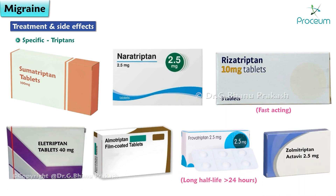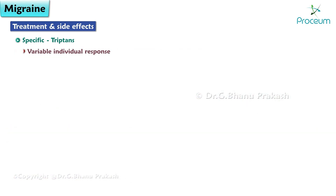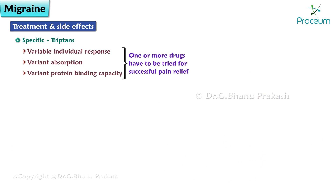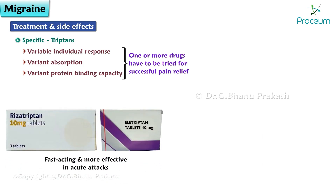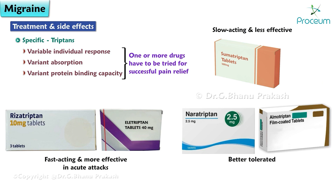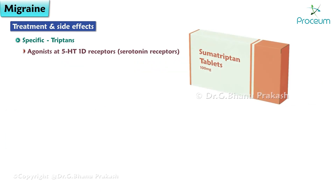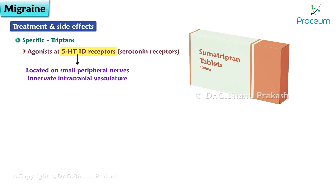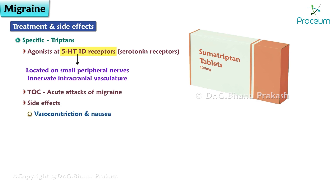Triptan examples include sumatriptan, naratriptan, rizatriptan (fastest acting), eletriptan, almotriptan, frovatriptan (long half-life greater than 24 hours), and zolmitriptan. Triptans have variable individual response due to variant absorption and protein binding. Rizatriptan and eletriptan are fast acting and more effective than sumatriptan in acute attacks. Naratriptan and almotriptan are better tolerated. They are agonists at the 5-HT1D serotonin receptors on small peripheral nerves innervating the intracranial vasculature.